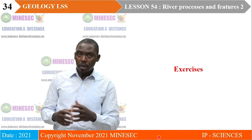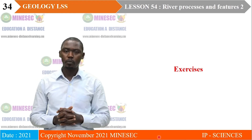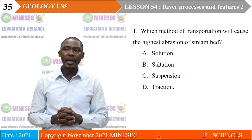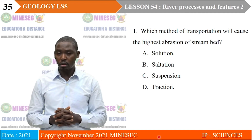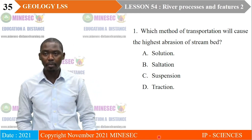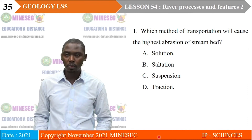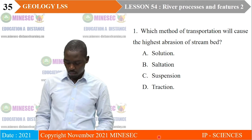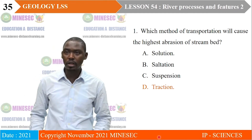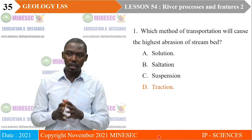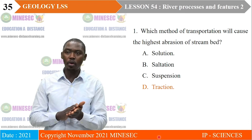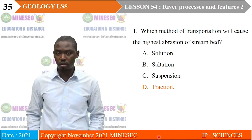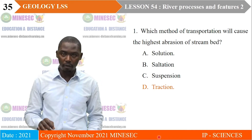We now take on some evaluation exercises. Exercise one: Which method of transportation will cause the highest abrasion of the stream bed? A. Solution, B. Saltation, C. Suspension, D. Traction. Our correct answer is D — Traction. Traction is a method of transportation in which the sediment is in close contact with the river's bed, moved either by rolling or dragging under the force of the river's motion.